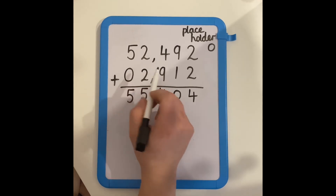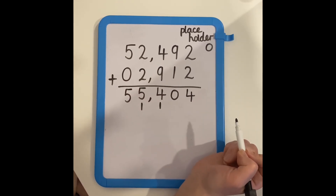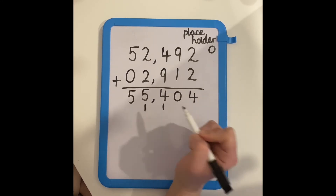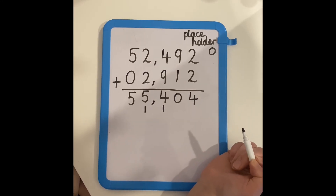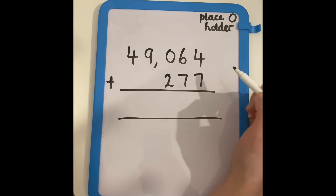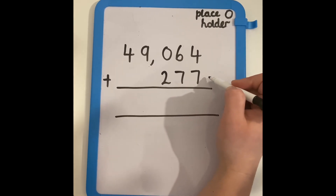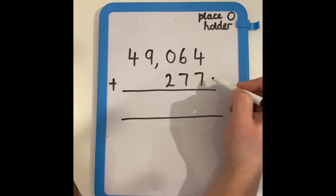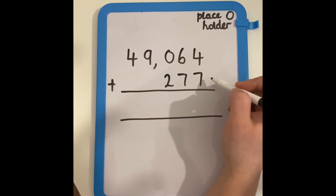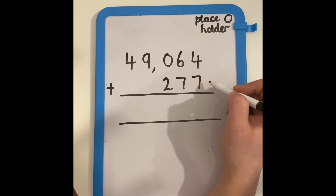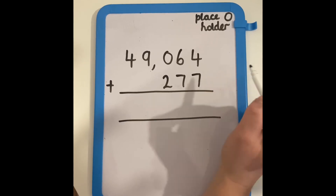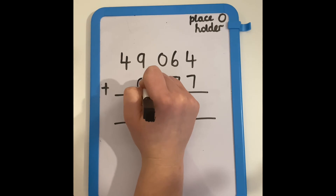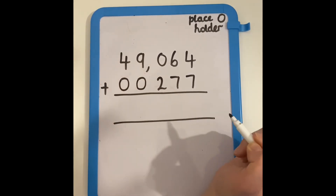And five add nothing is five. So I can see that 52,492 add 2,912 is 55,404. We are now going to look at adding a five digit and a three digit number. You should have written down that we need a placeholder in our thousands column and in our ten thousands column.